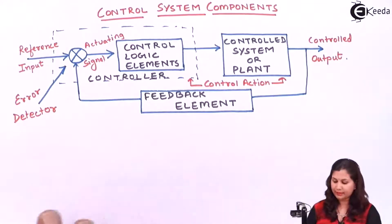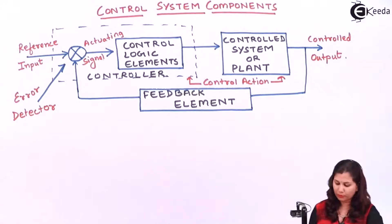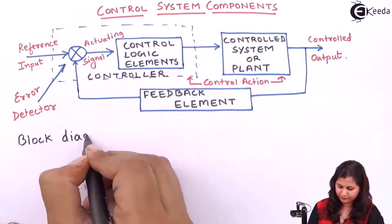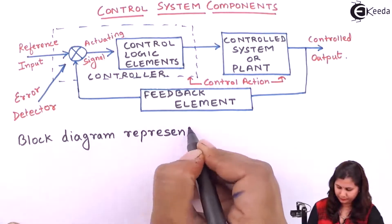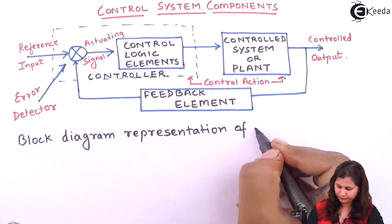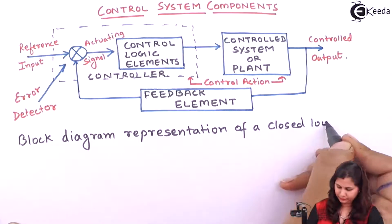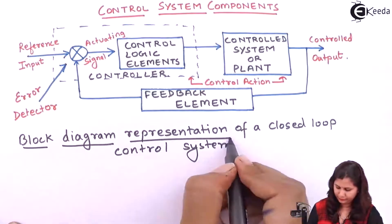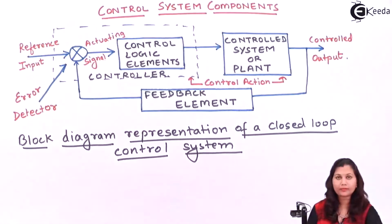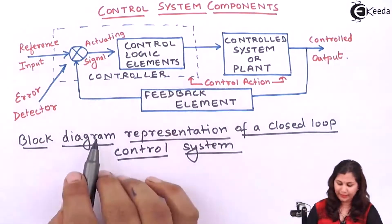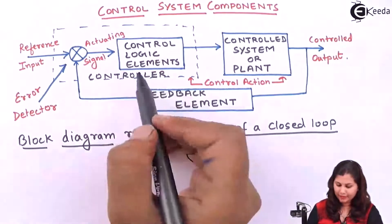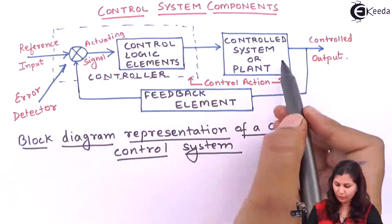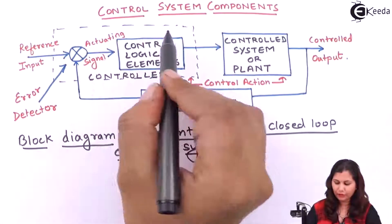This is the block diagram representation of a closed-loop control system. In this block diagram, we have three elements. The first is the feedback element, second we have the controlled system, and third we have the controller.